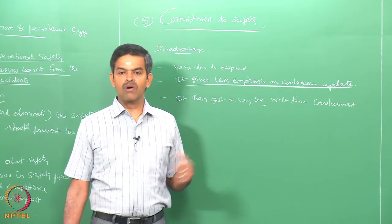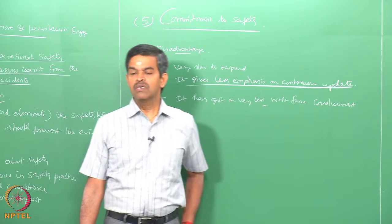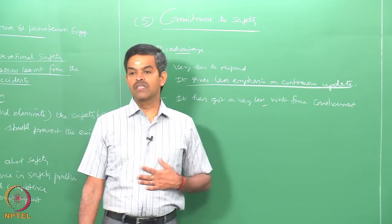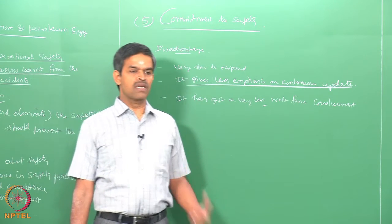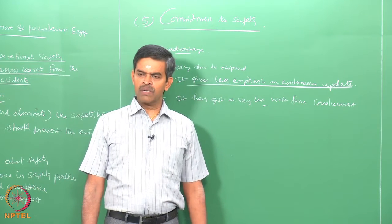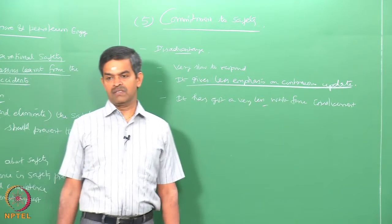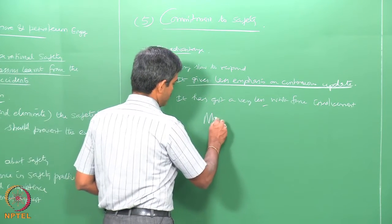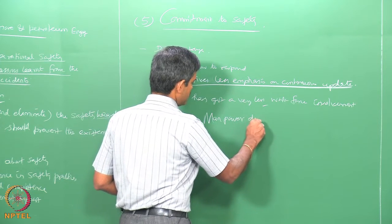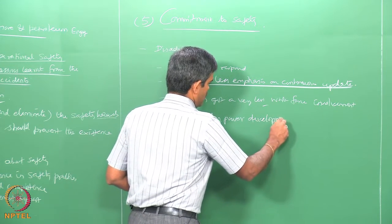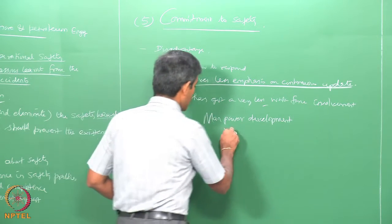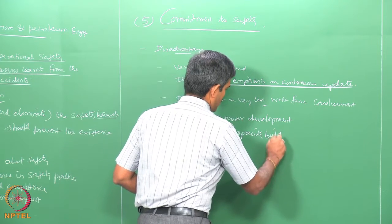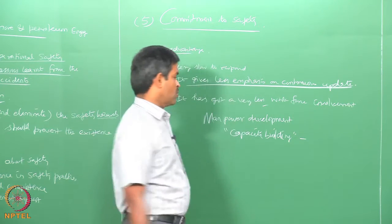An electrical short circuit can make all mechanical and electromechanical devices inoperative. Therefore, personnel and teams should be completely trained in adhering to safety practices. Manpower development towards safety programs — what we call in broader terms as capacity building — is very important towards a safety program.